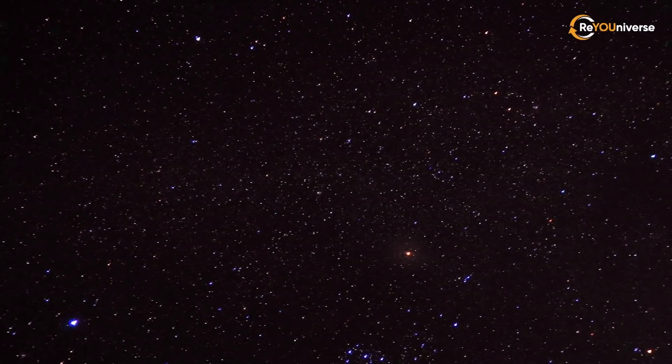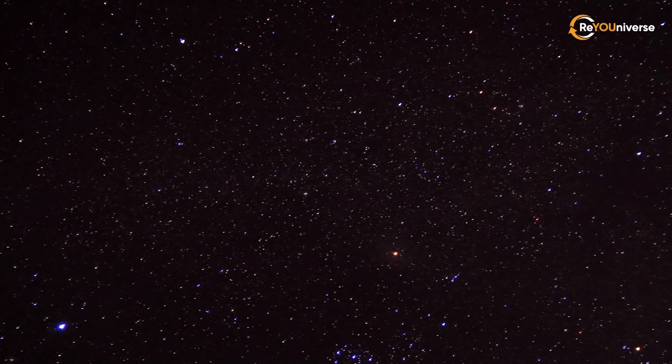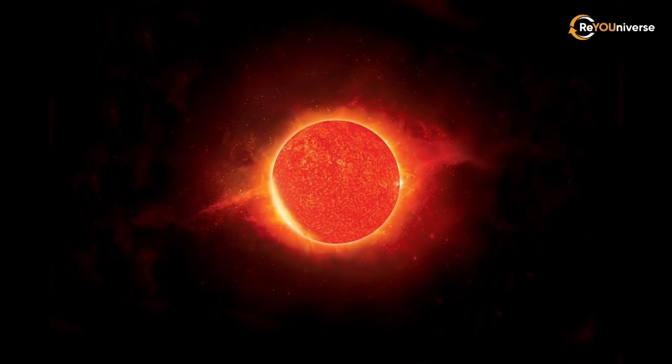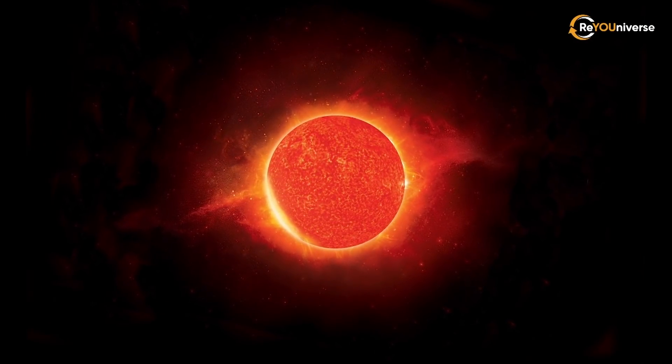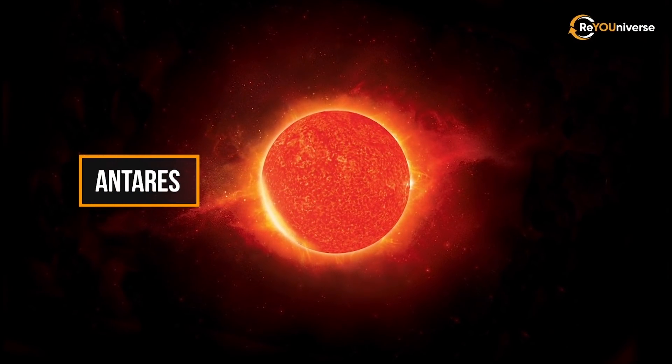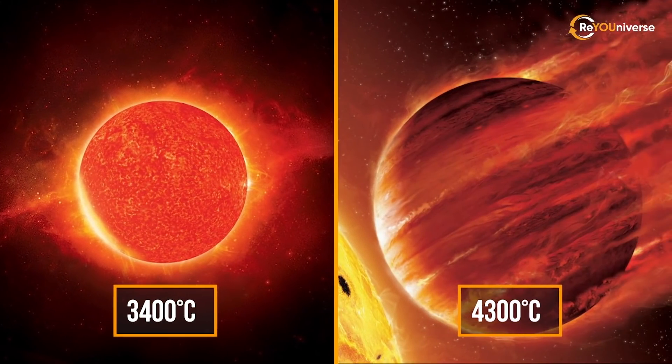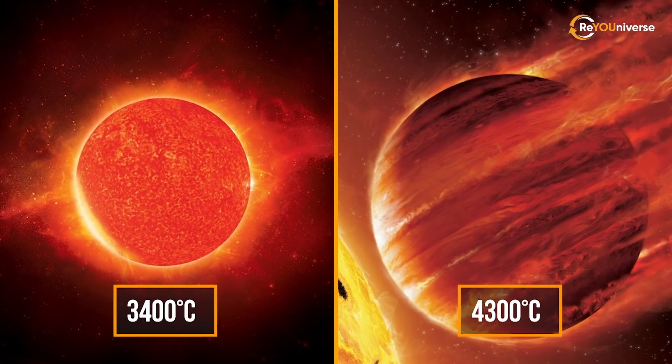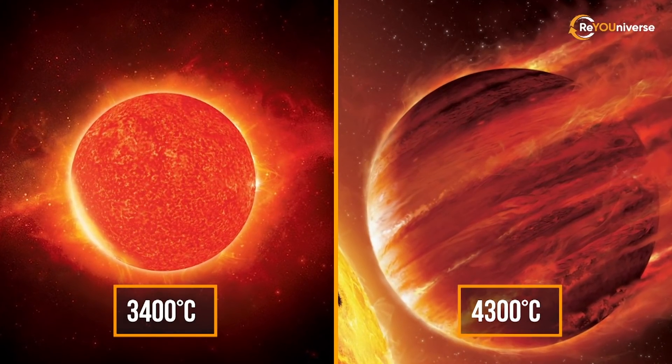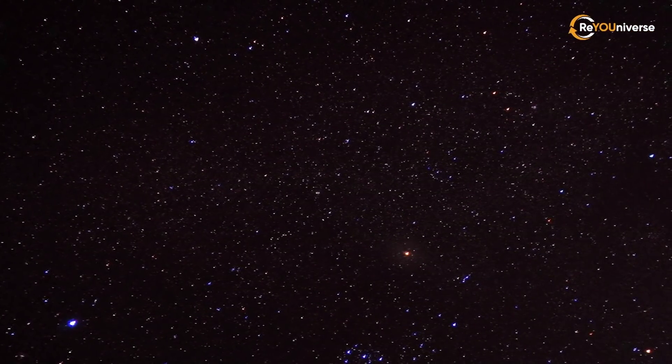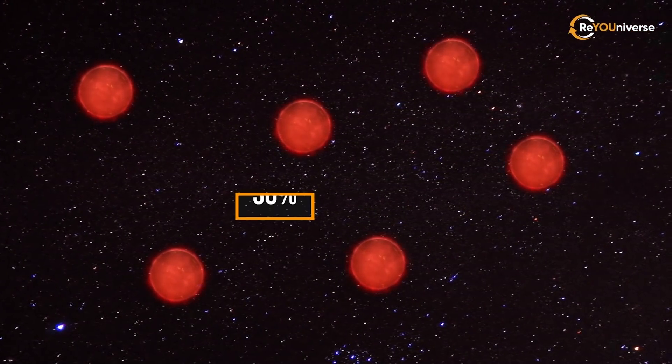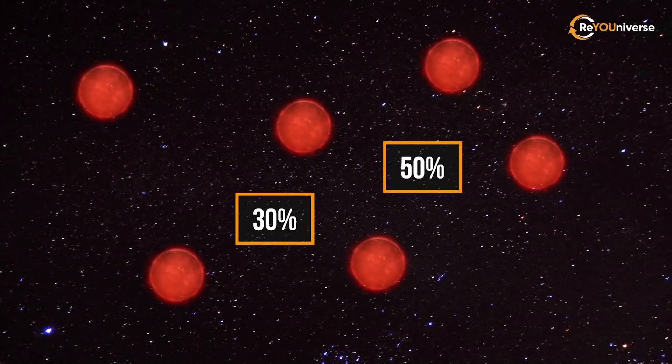In fact, this is hotter than most stars in the universe. For example, the surface temperature of the red star Antares is only 3,400 degrees Celsius. This is almost 1,000 degrees lower than on the planet KELT-9b. And keep in mind that red dwarfs constitute about 30 to 50 percent of all stars.